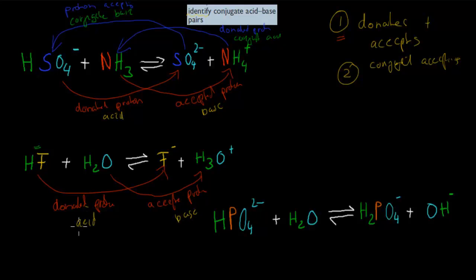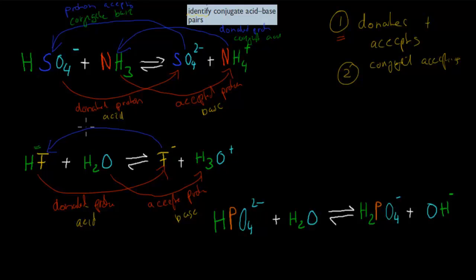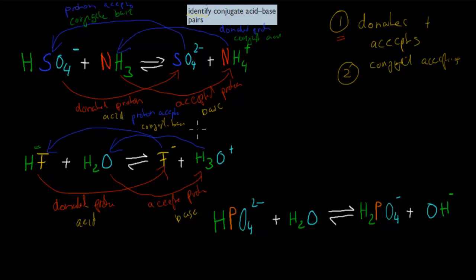We should expect that the actual acid in the forward reaction would be the base in the reverse reaction. So the fluoride ion should act as a base in the reverse reaction — going from fluoride ion to hydrofluoric acid, it would grab a hydrogen, making it the proton acceptor, so it would be the conjugate base. And the hydronium ion, since it donated a hydrogen to the fluoride ion, would be the conjugate acid, as it has donated a proton. So our acid in the forward reaction is our conjugate base in the reverse reaction, and our base in the forward reaction is our conjugate acid in the reverse reaction.